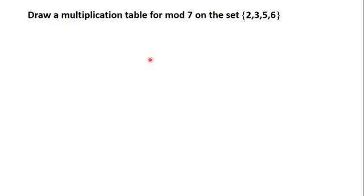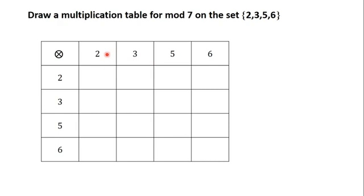When you are asked to draw a table for an operation in a given modulus and you are given a set of values in the question, you have to use that set of values to draw the table. We have four values in this set: 2, 3, 5, 6, so we are going to draw a table with five columns and five rows. The operation is multiplication, so you write the multiplication sign in the first cell with a circle around it, then list the numbers 2, 3, 5, 6 in the first row and first column.